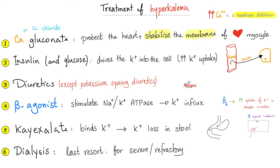How do you protect the heart? Stabilize the membrane. Calcium stabilizes membranes — when calcium is available, it interferes with sodium, preventing sodium from entering excitable tissue and thereby stabilizing the membrane. Next, for hyperkalemia, give insulin because it pushes potassium into the cell. But don't forget to give glucose as well, because insulin will also drive glucose into the cell. If you give insulin without glucose, the patient can develop hypoglycemia. That's why when you give insulin, give glucose with it.